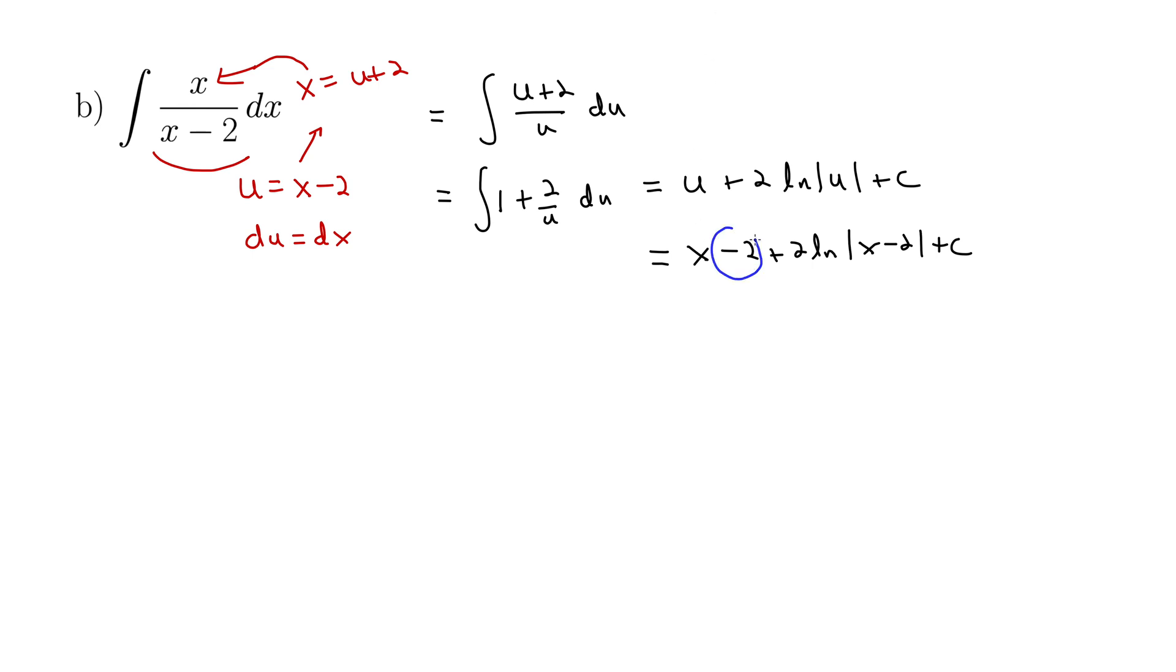Because whatever that constant c is, c minus 2 is still a constant, and we'll just use the same dummy variable c for our constant. So this gives our even better answer as x plus 2 natural log absolute value of x minus 2 plus c. We just use c again and again for whatever the constant is, even though now it's c plus 2, we'll still call that c.